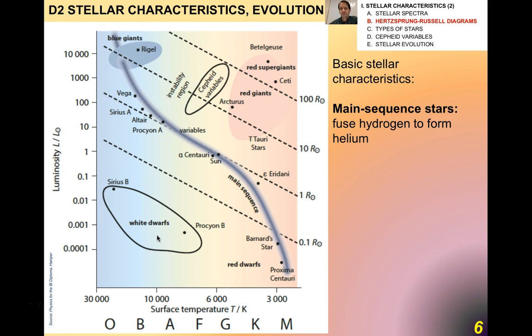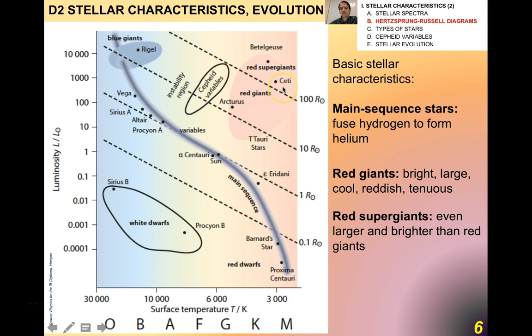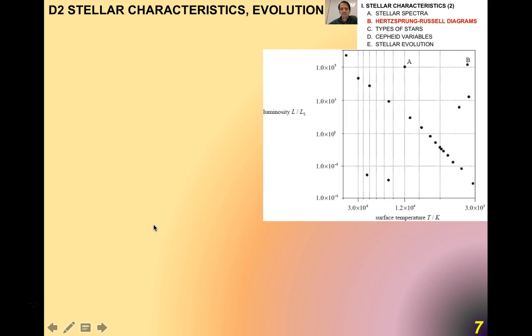So basic stellar characteristics. The main sequence stars, the ones that appear most stars are on the main sequence. They fuse hydrogen to form helium. Red giants, they're bright, large, relatively cool. They have relatively low temperatures, and they tend to be red as a result. And the red supergiants are even larger and brighter than red giants. So again, you have low temperature stars here, but very high luminosity. That is not the main trend that appears on the main sequence. So white dwarfs, way down here in the lower left-hand corner, tend to be dim, small, hot, whitish, and very, very, very dense.